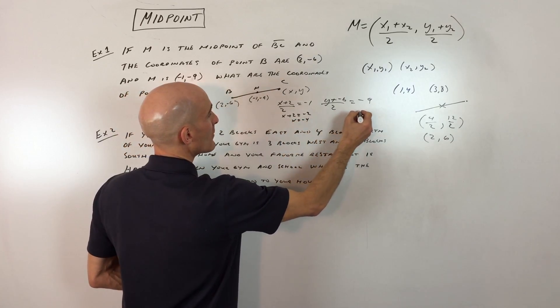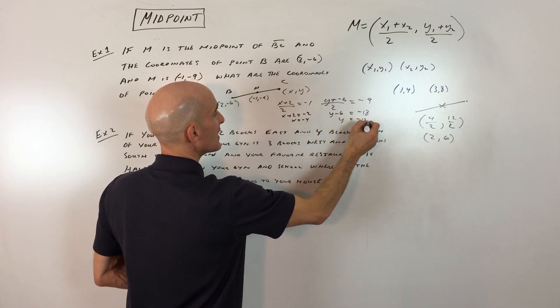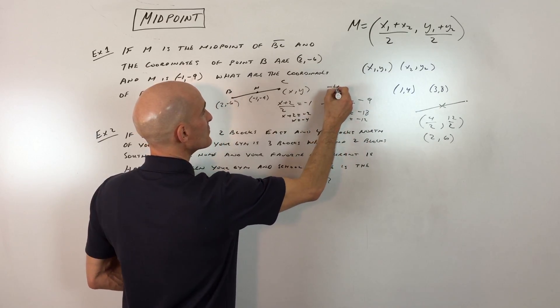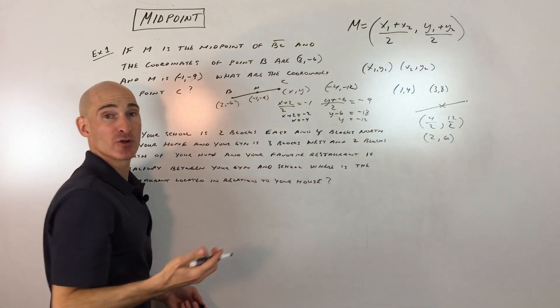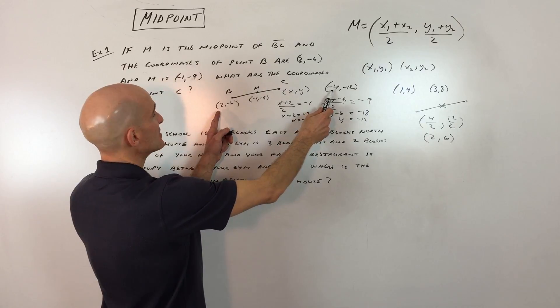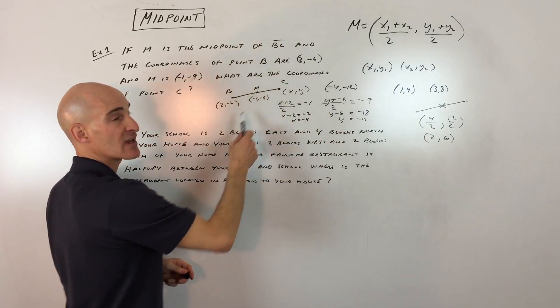Same thing here, multiply both sides by 2. That gives you Y minus 6. If you add 6 to both sides, you get negative 12. So you can see your answer is going to be negative 4, negative 12. And if you want to double check your work, just add these together and divide by 2. So negative 4 plus 2 is negative 2, divided by 2 is negative 1, and so on.